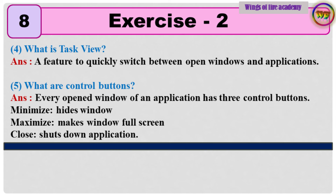Question 4: What is task view? Answer: A feature to quickly switch between open windows and applications. Question 5: What are control buttons? Answer: Every open window of an application has three control buttons. Minimize — hides window. Maximize — makes window full screen. Close — shuts down application.